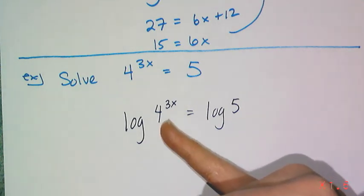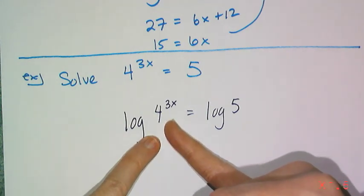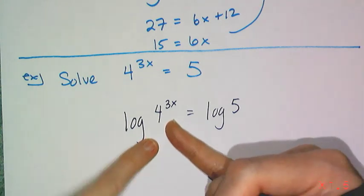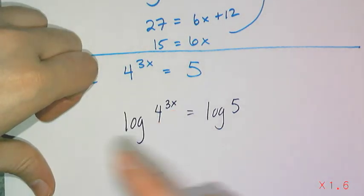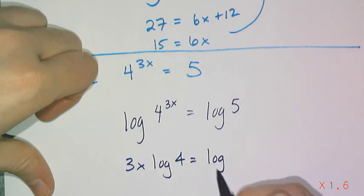So what I have to do now is get it out of the exponent. And the way to do that is to use the power rule. So I have to take 3x out. So I get 3x log 4 is equal to log 5.